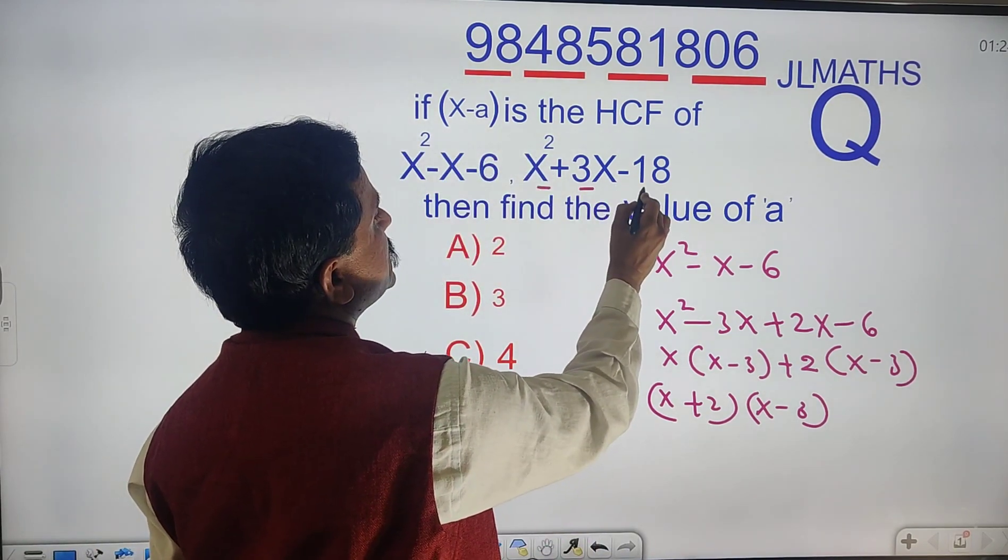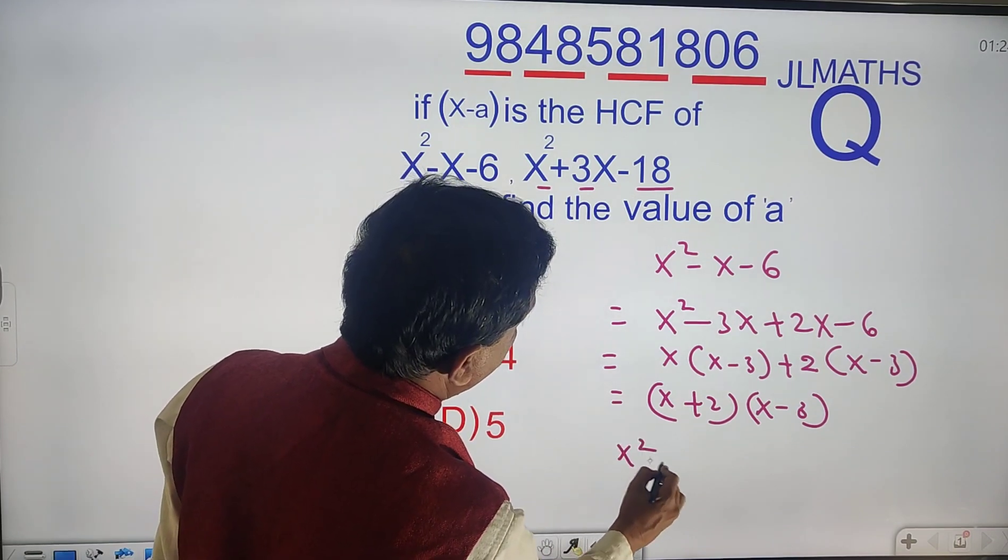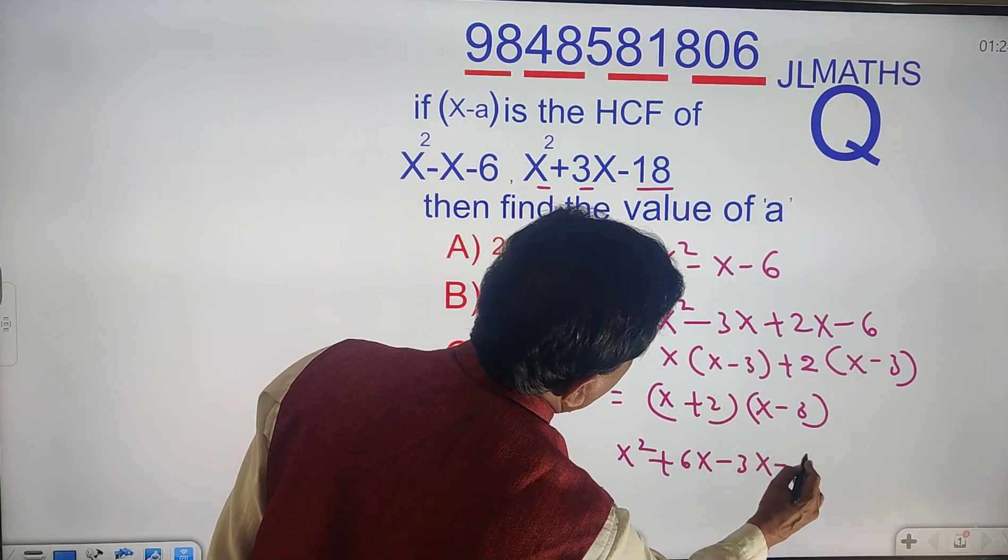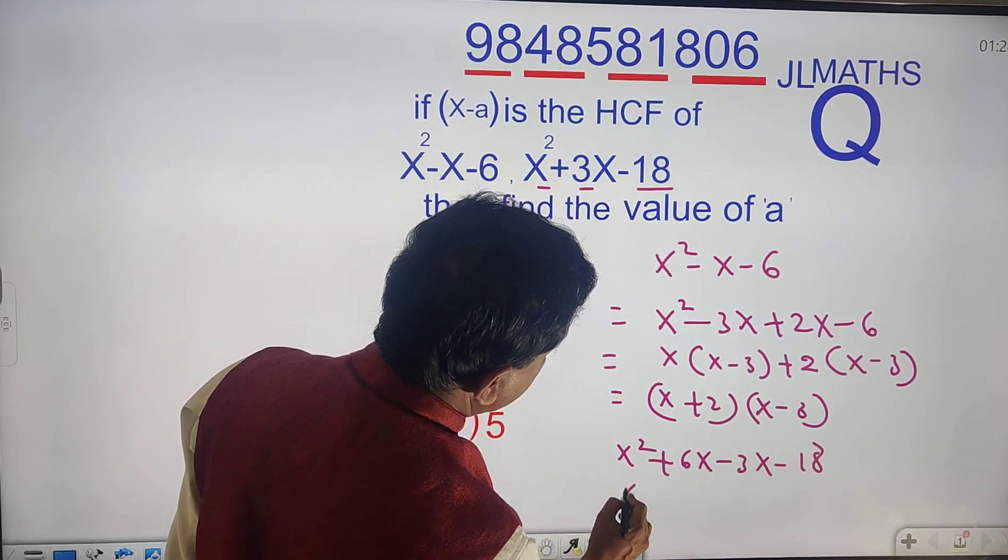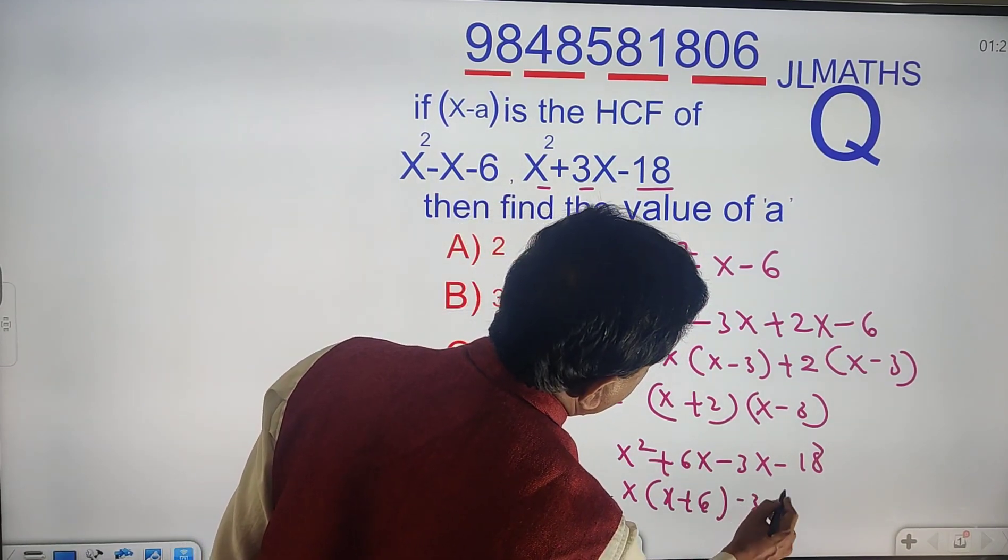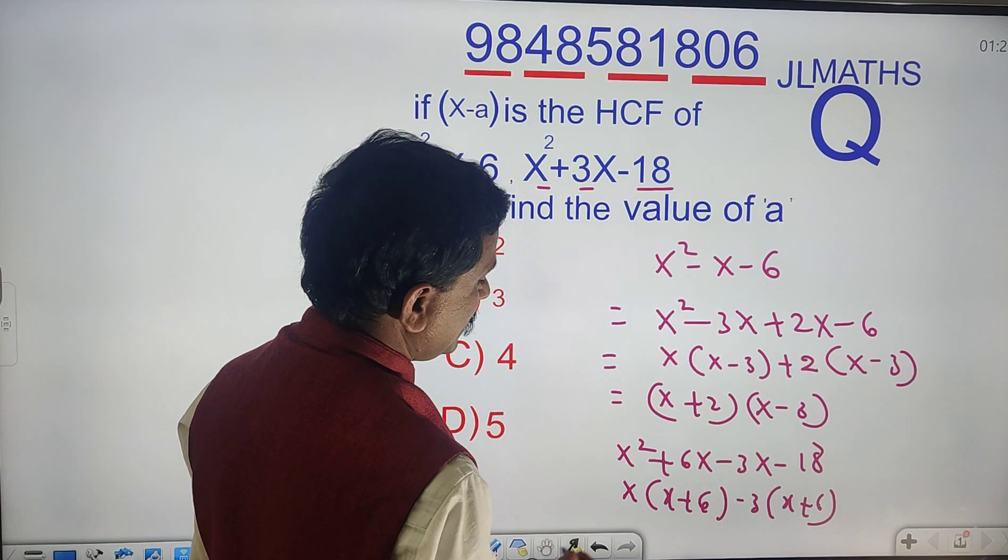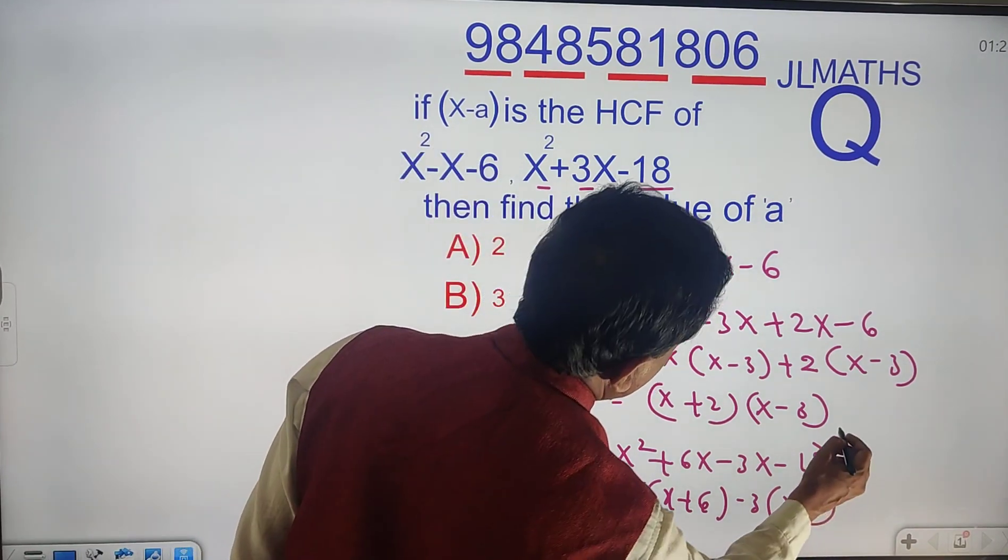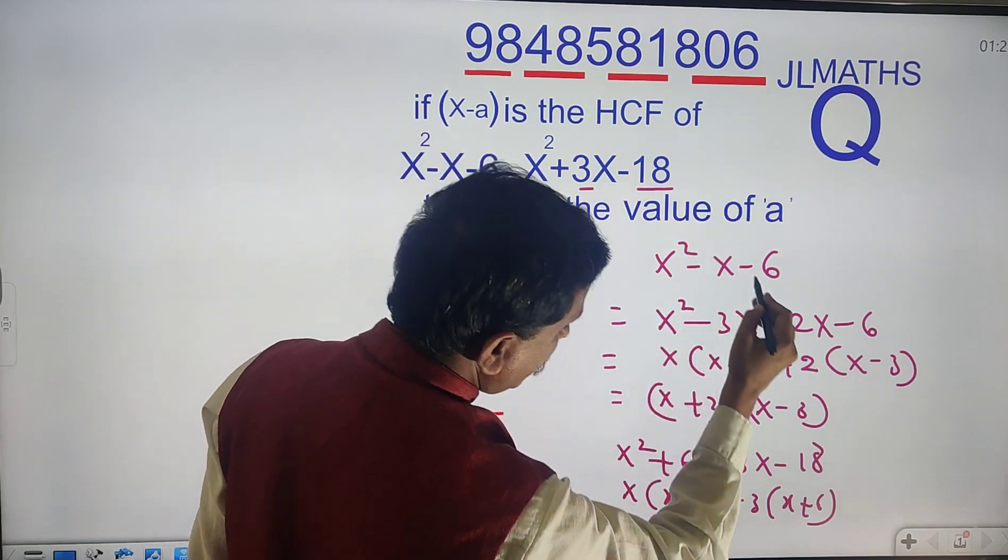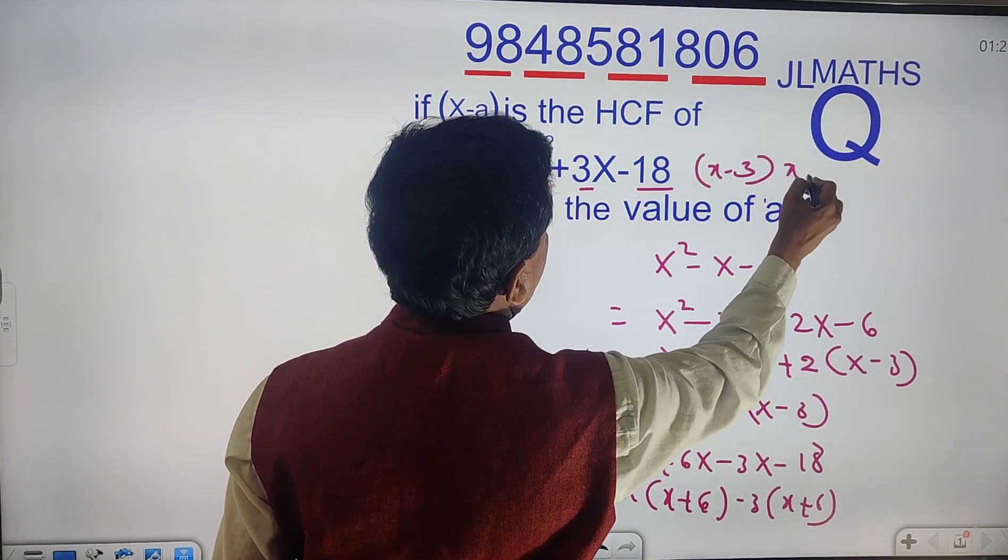At the same time, x square plus 3x minus 18 is equal to x square plus 6x minus 3x minus 18, which equals x plus 6.